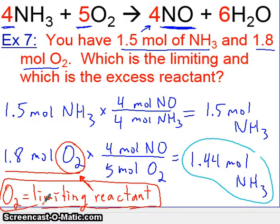So hopefully this makes sense. We took both of our given amounts, we converted to one of the products, and then the reactant that formed less was our limiting. Why don't we try one more.